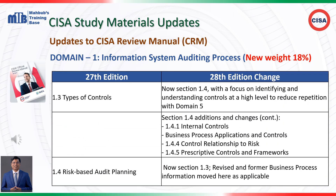The types of control section under 1.3 has been expanded and moved to 1.4 in the 28th edition. It now includes detailed discussions on internal controls (1.4.1), business process applications and controls, the relationship of controls to risk (1.4.4), and prescriptive controls and frameworks (1.4.5), offering a comprehensive understanding of controls within organizational contexts. The risk-based audit planning section has been revised and moved from 1.4 to Section 1.3 in the 2024 edition.